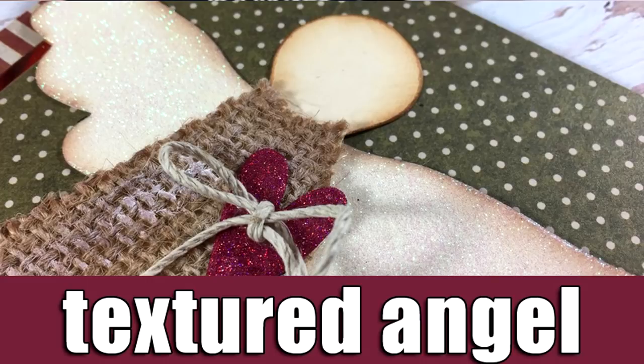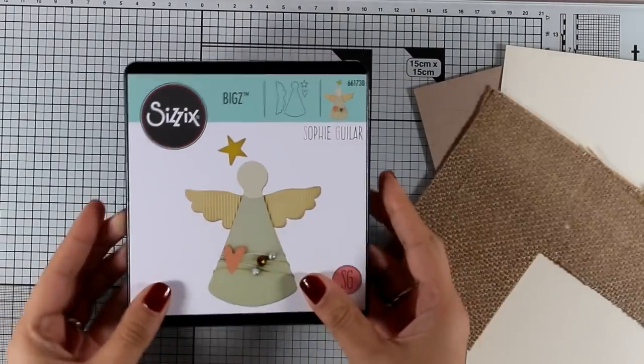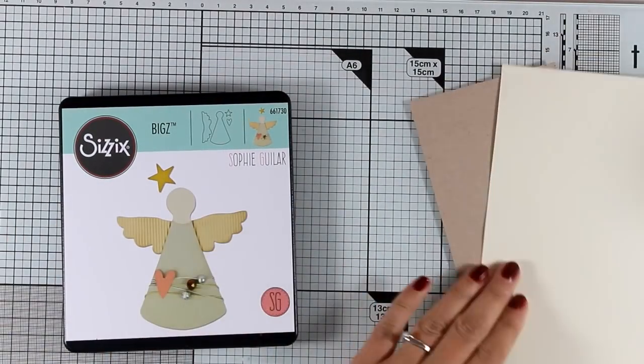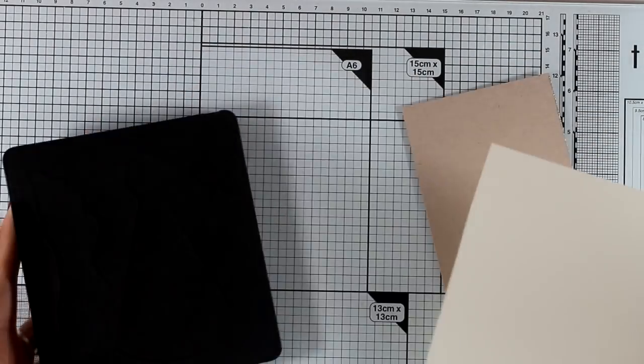Hi everyone and welcome back, it's Vicky here. Today I'm going to have some fun with Sizzix. I'll be using this angel Bigz die, and as shared before, one of the great things of using Bigz dies is that you can cut out thicker materials and not only paper.